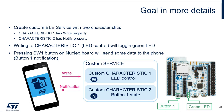We will create a custom proprietary service with two characteristics. The first is of property write, so the phone can write to it and the application will be able to process the event. The second characteristic is of type Notify, so whenever you press a button, a notification will be sent to the phone.